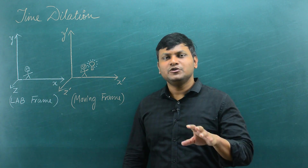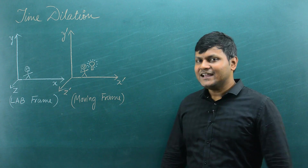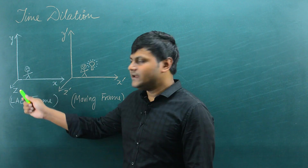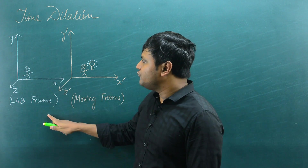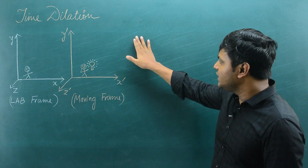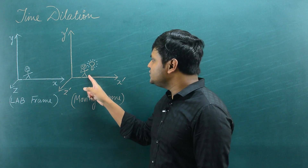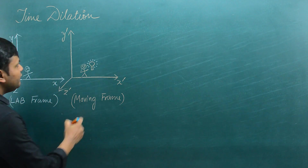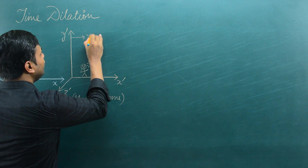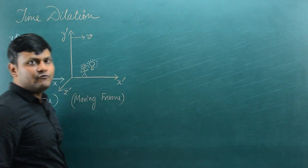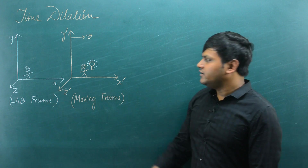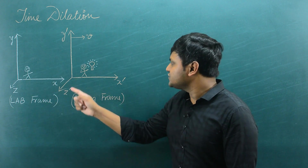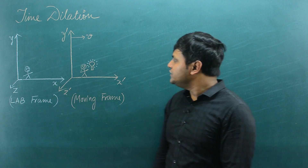I am going to prove this today using a very simple setup and the Lorentz transformations. Here I have two observers: a lab frame — an observer at rest with respect to the board — and a moving frame, an observer in motion with respect to the lab frame, traveling at a velocity V. I have associated Cartesian coordinate reference frames with both observers: x, y, z and x dash, y dash, z dash axes, which are respectively parallel to each other.